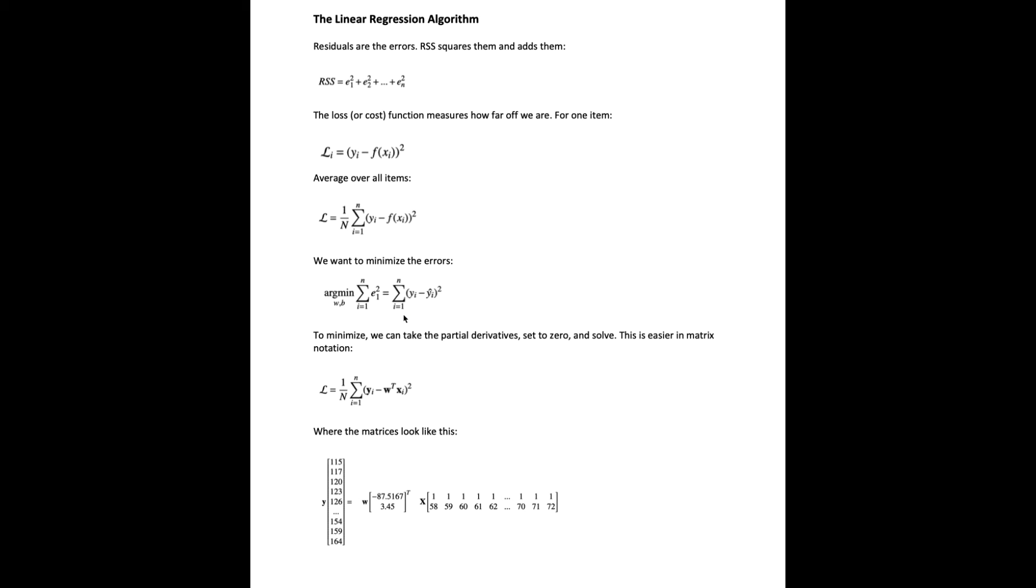So to minimize mathematically, what we can do is take the partial derivatives, set to zero, and solve. This turns out to be a lot easier in matrix notation. This is still our residual. The true value minus our parameters times the weight. The data would look like this in our women data set.